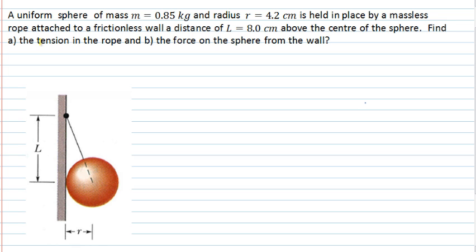The question asks us to find two things about the system. One is the tension which is in the rope attached to the sphere, and secondly, the force that the frictionless wall exerts on the sphere. We're given some additional information. We're told the sphere's mass is 0.85 kg, its radius is 4.2 cm, it's held in place by a massless rope, the wall is frictionless, and the centre of the sphere is located 8 cm below the point of attachment.